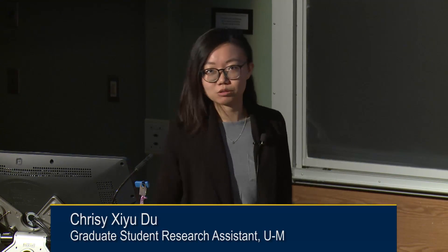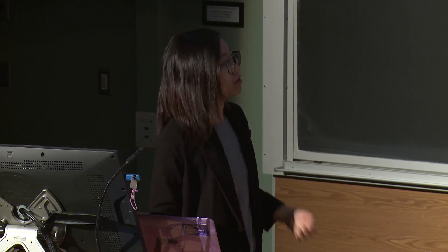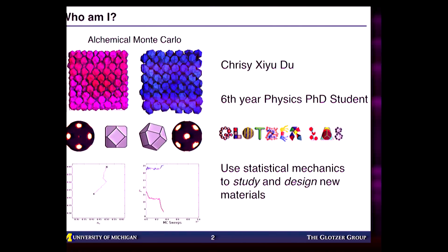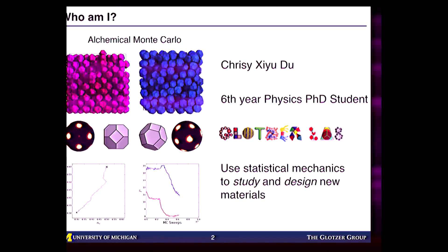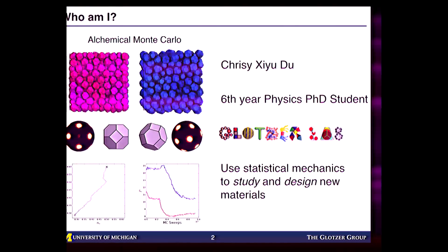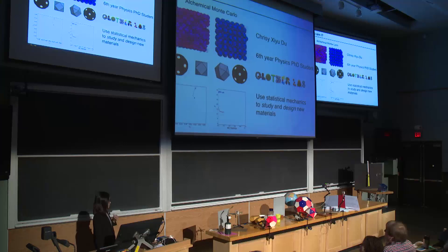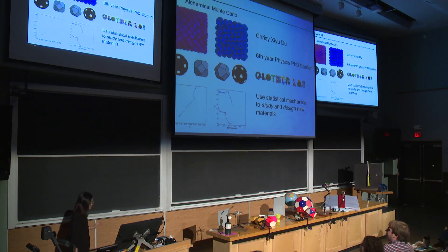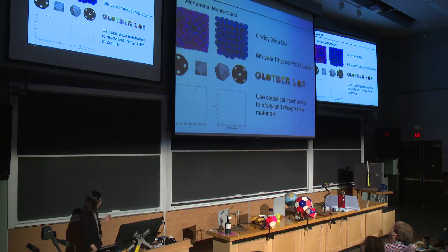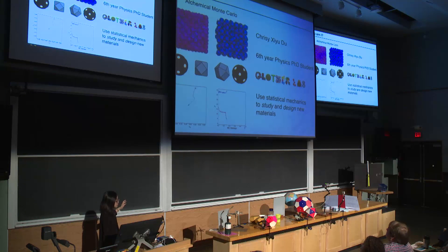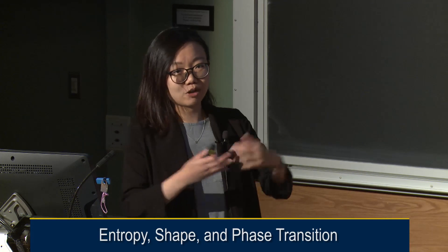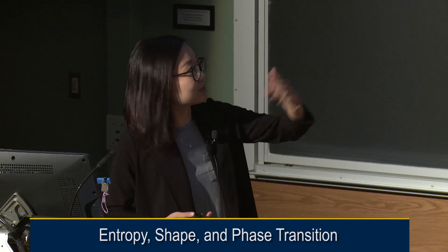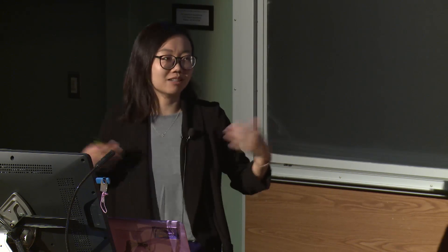Before I jump in, I want to talk a little bit about what I do in the Glotzer group. Basically I use statistical mechanics to study and design new materials. We're a purely computational lab — the only experiments we ever do involve an air hockey table and a dryer. On the left, you can see computer simulations I do with different shapes of particles. This is kind of how I show my research — besides plotting things, it's trying to make a lot of pretty movies.